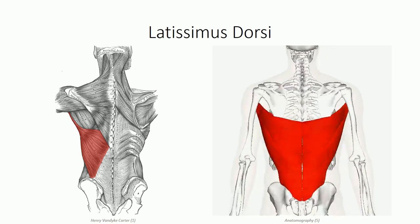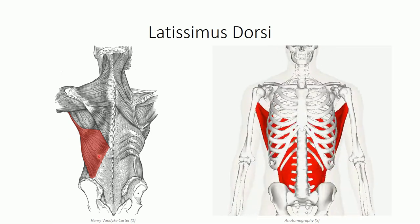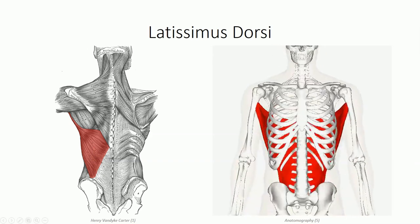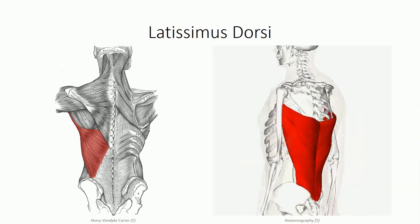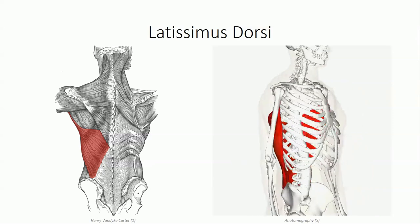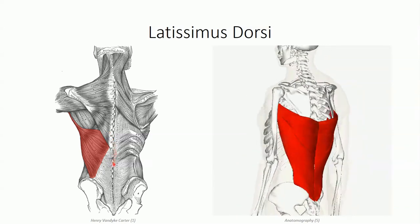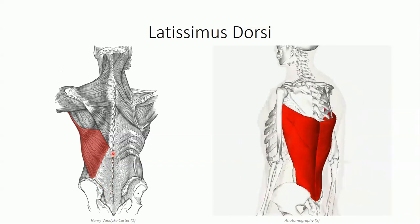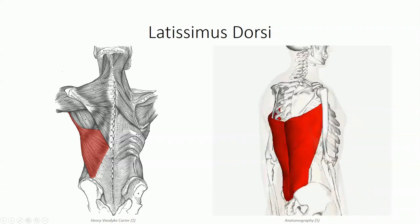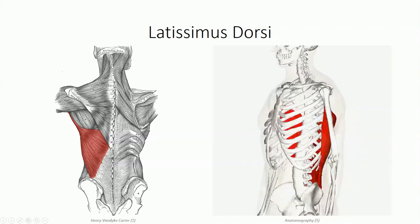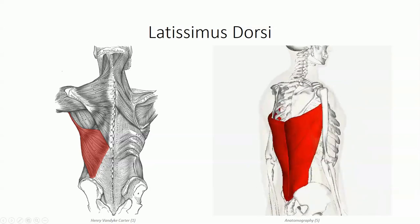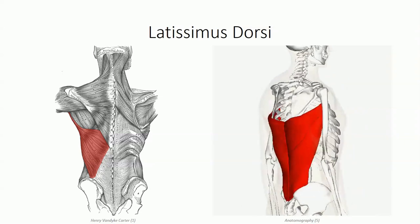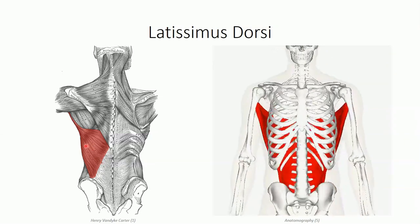Inferior to trapezius is latissimus dorsi, a broad, flat muscle that gives muscular individuals a V-shaped appearance. The term latissimus dorsi is from the Latin, meaning broadest of the back. It has a broad origin directly off the spinous processes from T7 and below. In the lumbar region, the tendon takes the form of an aponeurosis — a broad, flat sheet seen in numerous places in the body. This aponeurosis is given the specific name thoracolumbar fascia, through which the latissimus dorsi attaches to the spinous processes of the lumbar vertebrae and the iliac crest. It's also not uncommon to see latissimus dorsi originate off the lower three or four ribs.